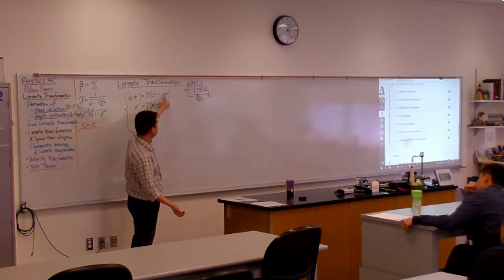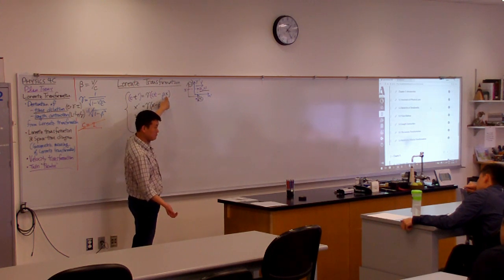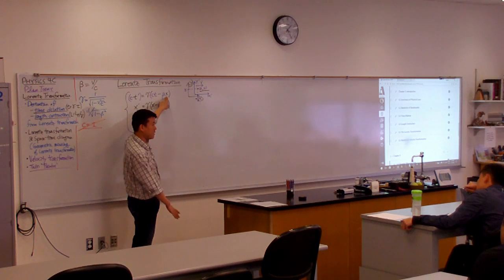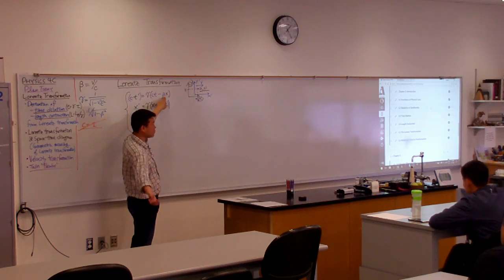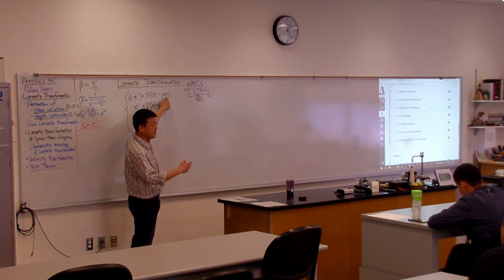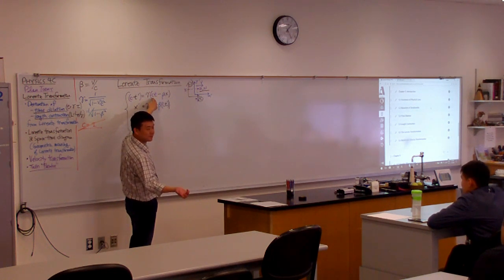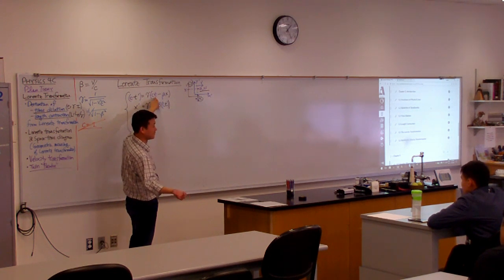But here, you have beta times X. In low speed limit, where beta is, if you're dealing 30 meters per second, that's beta is 10 to the minus 7. So 10 to the minus 7 times a meter becomes insignificant compared to speed of light times any amount of seconds.